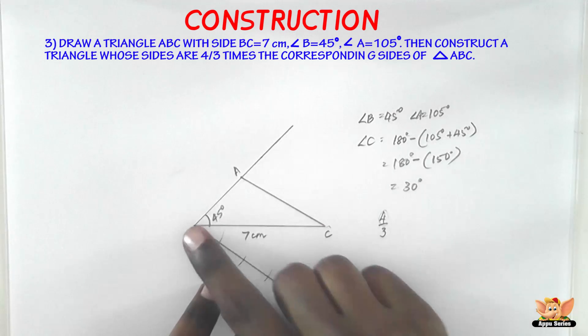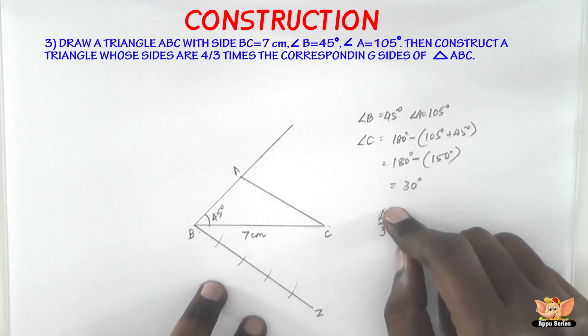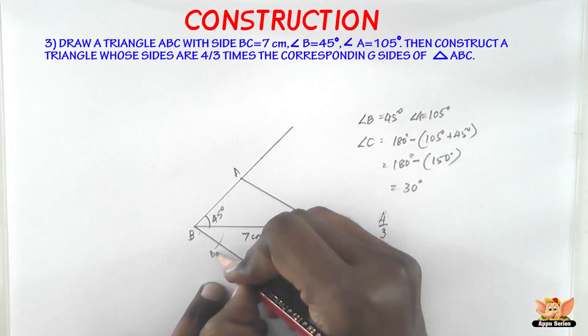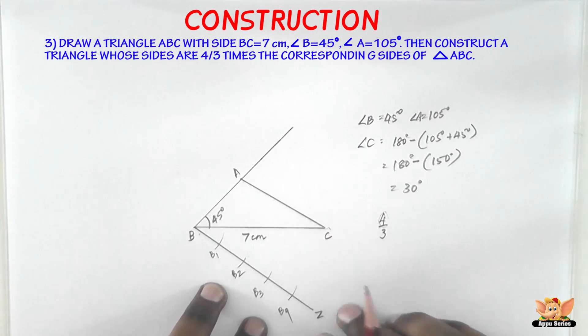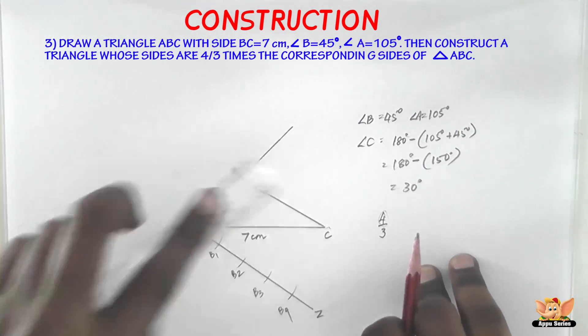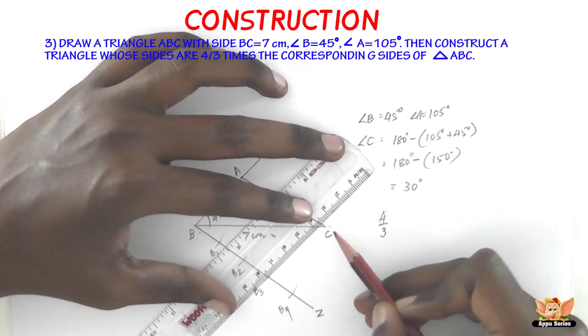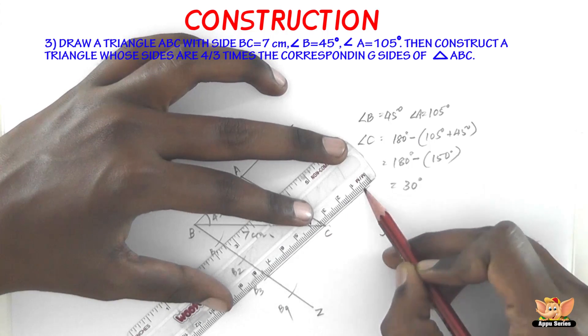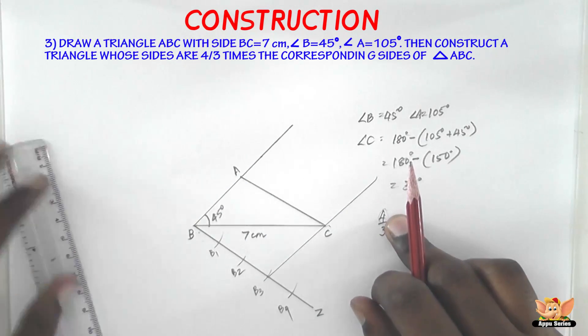So what this 4 by 3 means is, if this triangle is 3, if these sides are 3, then these sides of the triangle that we're going to construct should be 4. So first of all, let us name these as B1, B2, B3, and B4. And let us join B3 and C, because the original triangle is 3 and the new triangle is going to be 4. So that's why. So join C and B3 and extend the line. Again that is for the measurement of the angle using a protractor.